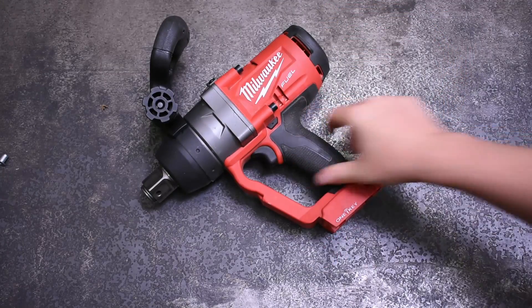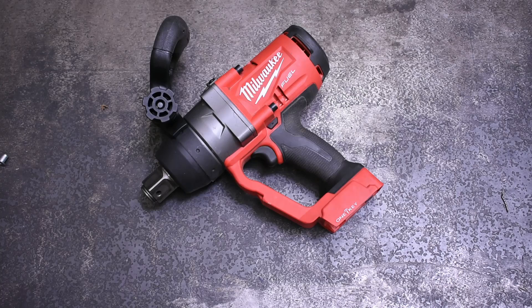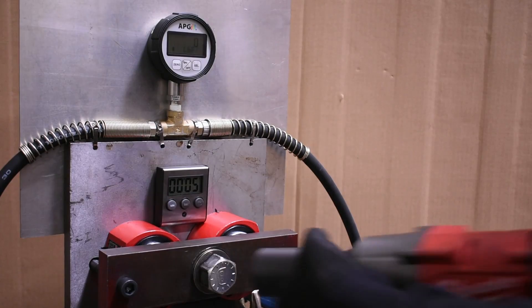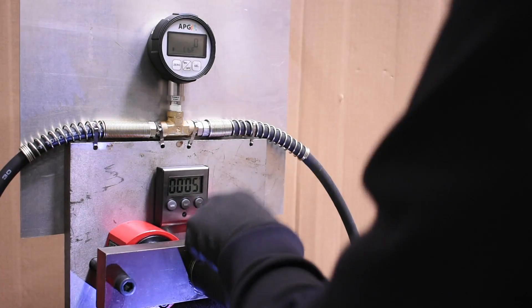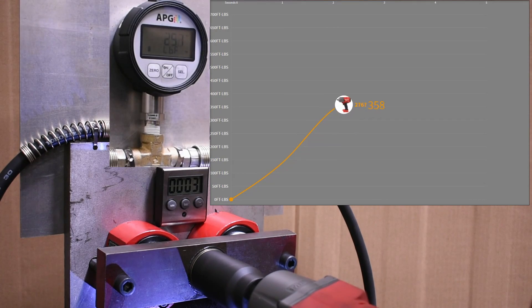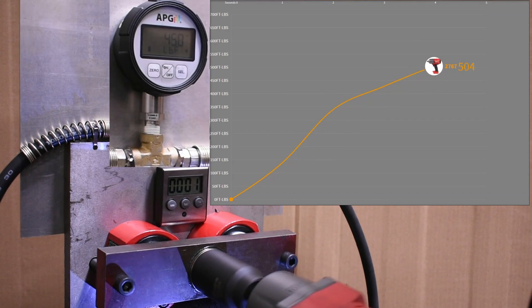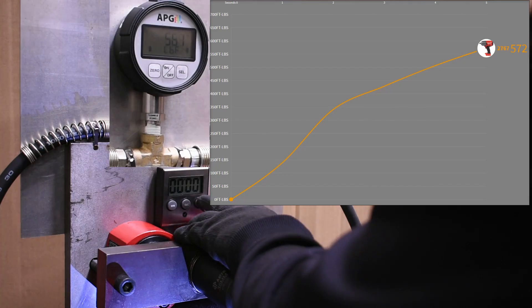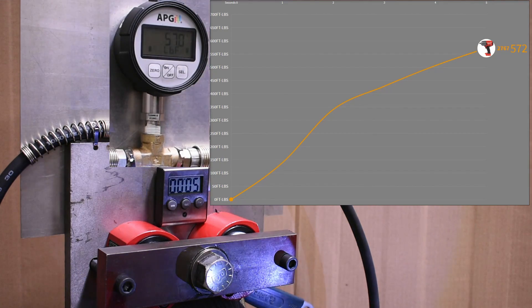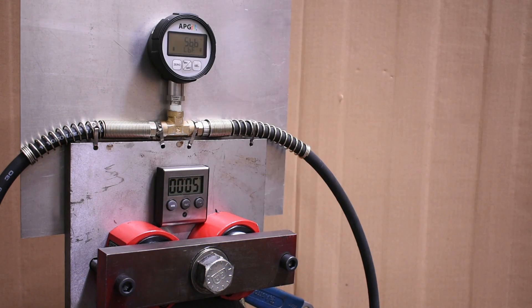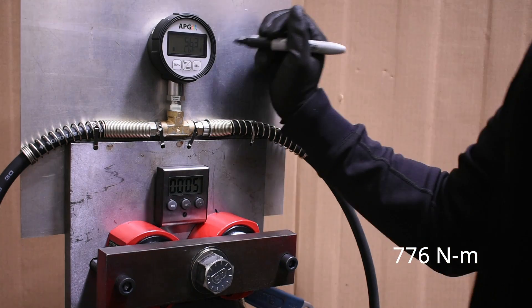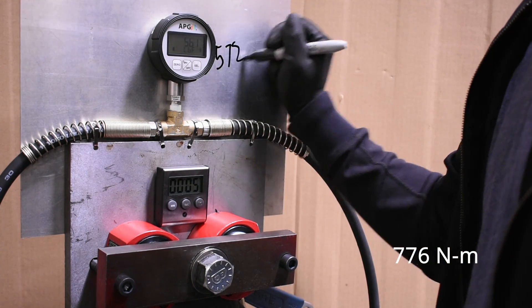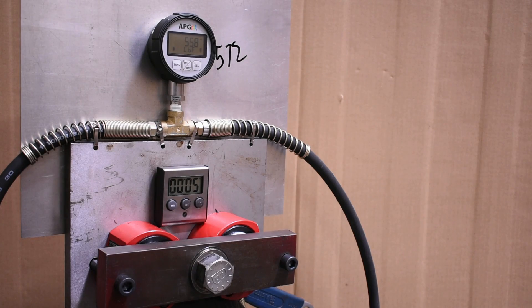Let's get into the testing though. We'll be showing this one-inch against the 2767-20 high torque you might be upgrading from if you need a lot more punch in the cordless flavor. Here's the half-inch high torque in our five-second working torque test: 572 is still, out of every impact we've ever tested on this channel, the highest we've seen in a working torque test. This thing just kills it in short forward bursts.